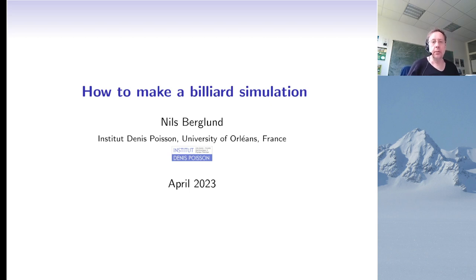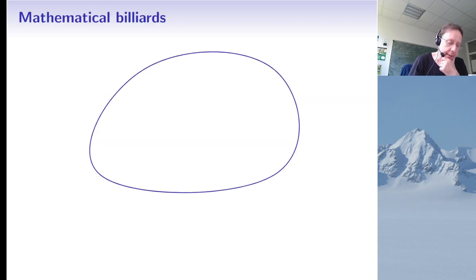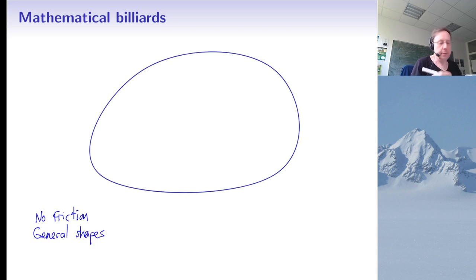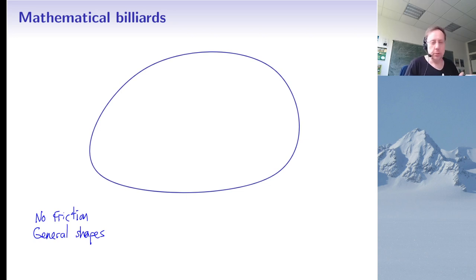Today I want to tell you how you can make a simulation of a mathematical billiard. Mathematical billiards are quite similar to pool billiards, but there are some important differences. We will assume there's no friction at all, and we're going to use more general shapes for the billiard table than just rectangles — nice smooth curves, or curves with a finite number of corners, but nothing like fractal boundaries or self-intersecting curves.